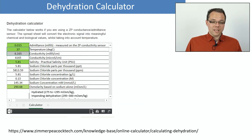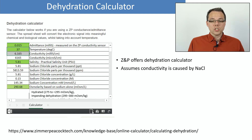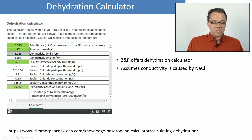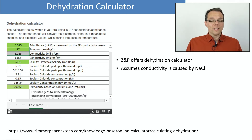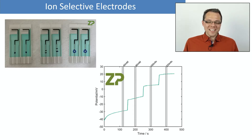On the Zimmer & Peacock website, you can find a calculator to compute osmolarity from conductivity — a popular measurement for biologists. There is a limitation: it assumes the conductivity is only based on sodium chloride, which is true for many situations and will serve your purpose well. If you actually want to measure the real chloride or sodium concentration, you would need to work with an ion-selective electrode — and Zimmer & Peacock also has a solution for that.